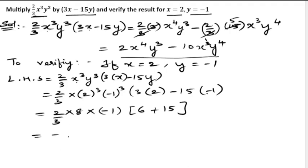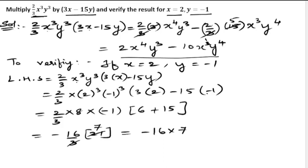So we have 2/3 × 8 × (−1) × (6 + 15) = 2/3 × (−8) × 21. That gives −16/3 × 21 = −16 × 7 = −112. So LHS = −112. Now we will look for RHS.